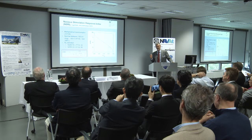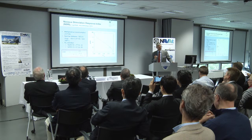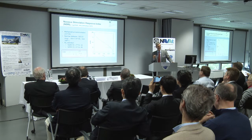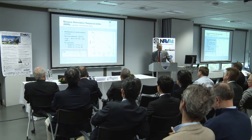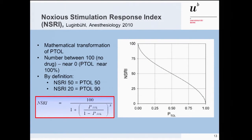What is the noxious stimulation response index? When we discussed anesthesia displays and relating anesthetic depth to isobols, we had the idea to define an index between 0 and 100 representing the total potency of the administered drugs as a number. The noxious stimulation response index — the NSRI — as published in 2010, is a mathematical transformation of tolerance to laryngoscopy with the formula shown here. It stretches the scale a bit at the deeper level of anesthesia, because if you titrate according to tolerance of laryngoscopy you move around the 90% scale, and stretching the scale makes differentiation a bit more simple.